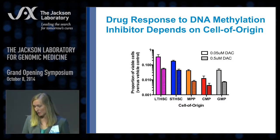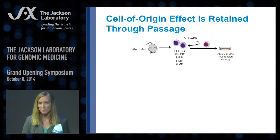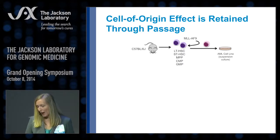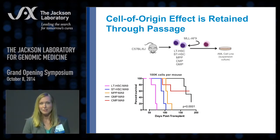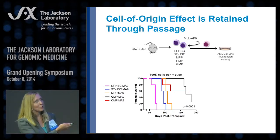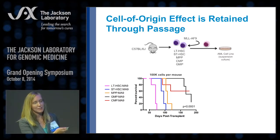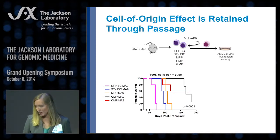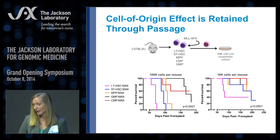One aspect we noticed was that when we derived cell lines from these different leukemias and continued to passage them in culture, the effect of cell of origin is retained. After many months of passaging, when we transplant them back in vivo into mice, stem cell-derived leukemias are still more aggressive with the shortest latency, while progenitor-derived leukemias have longer latency. We see this down to limiting dilutions of transplanted cells, suggesting this is a cell-intrinsic effect.